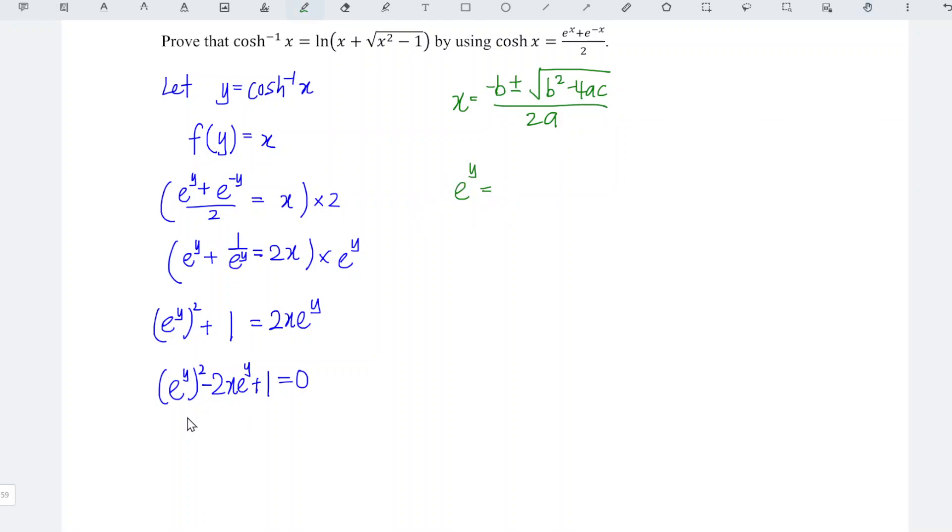Then we just have to obtain the value accordingly. So we have a is equal to 1, b equal to negative 2x, and c is equal to positive 1, which means that we have negative b is 2x plus minus square root of b square, which is 4x square minus 4 times 1 times 1, which is 4, divided by 2 times 1, which is 2.